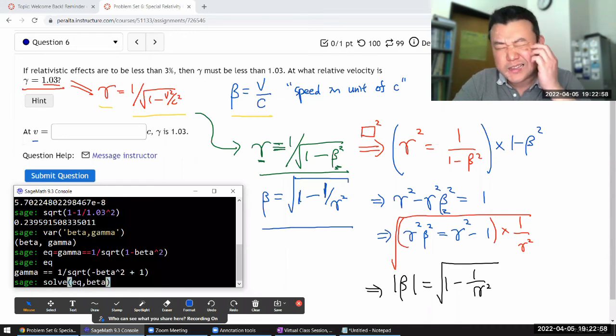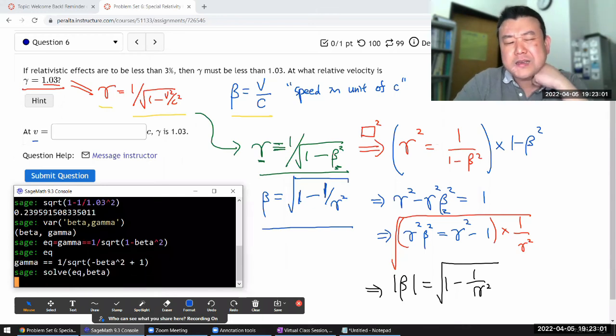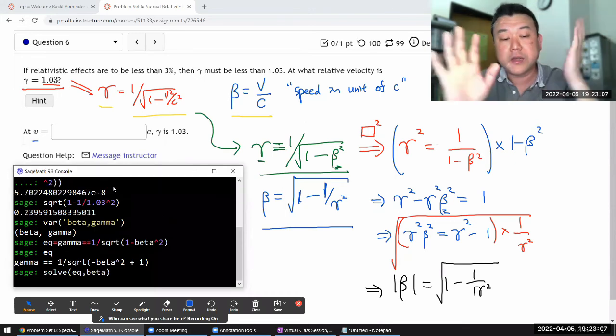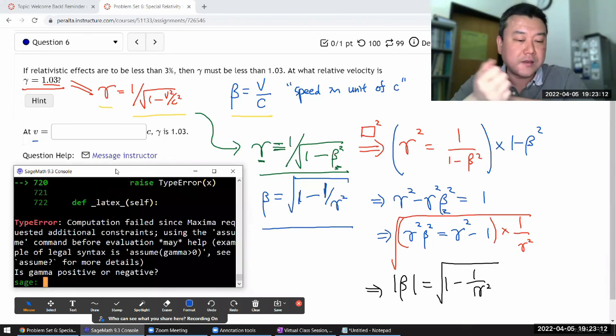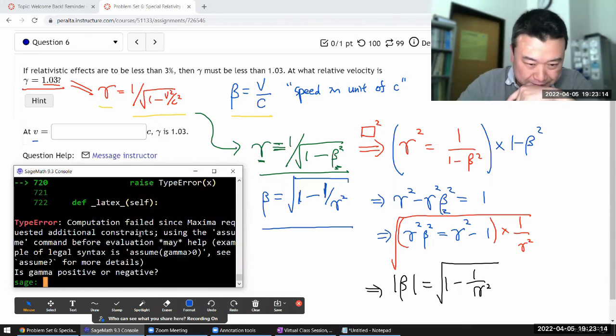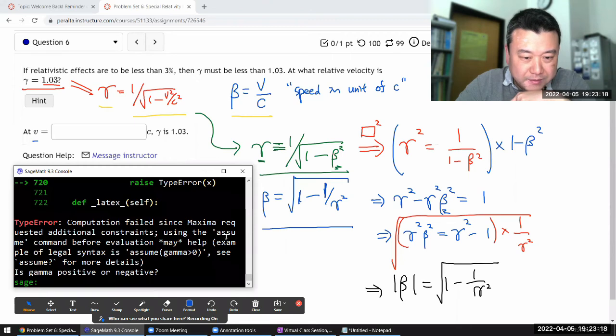And let's see if it'll complain. Sometimes it complains because computer algebra assistants tend to do these kind of calculations really generally. So, sometimes it'll complain, we need to know if beta is positive or negative. Yeah, computation failed since the maxima requested additional information.